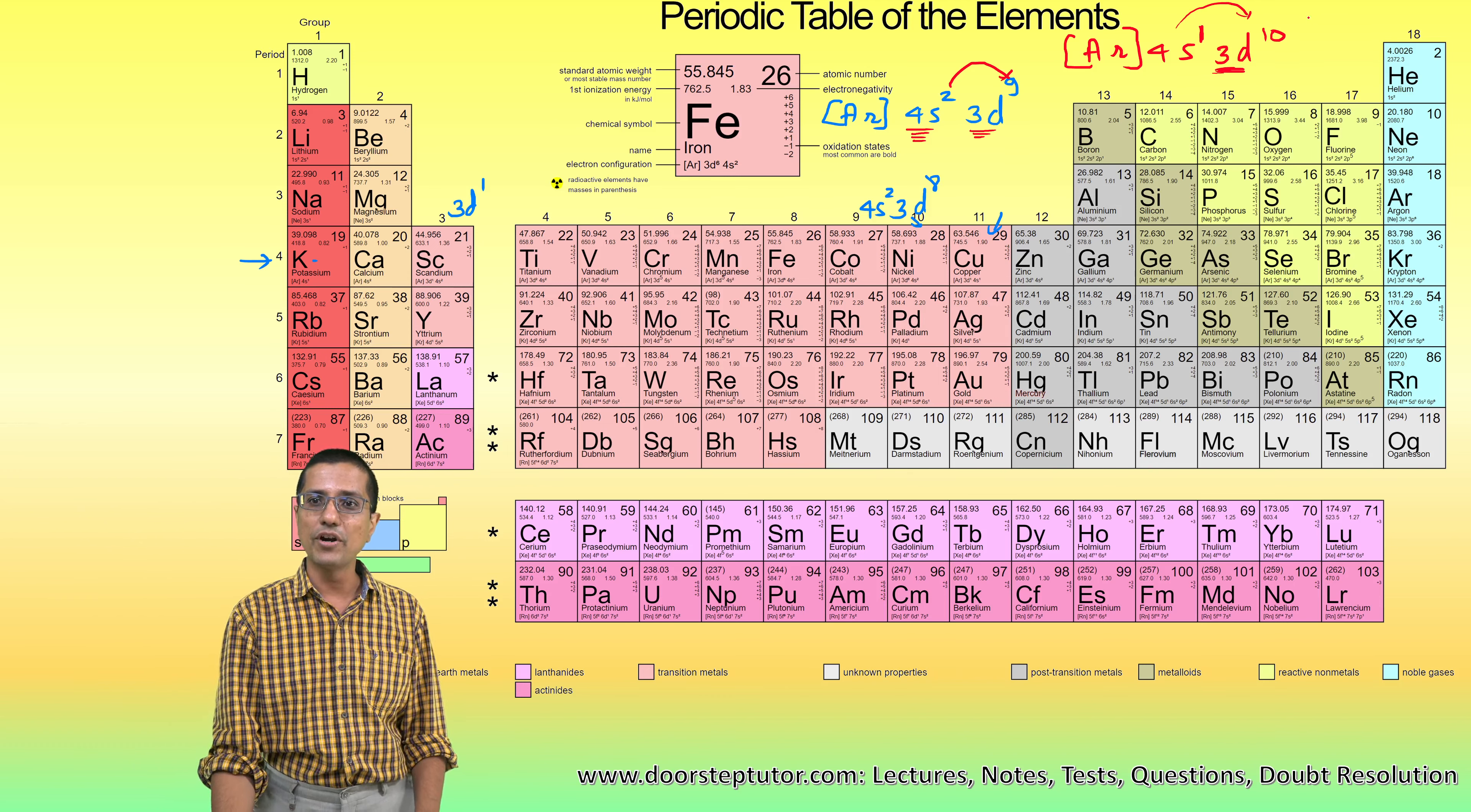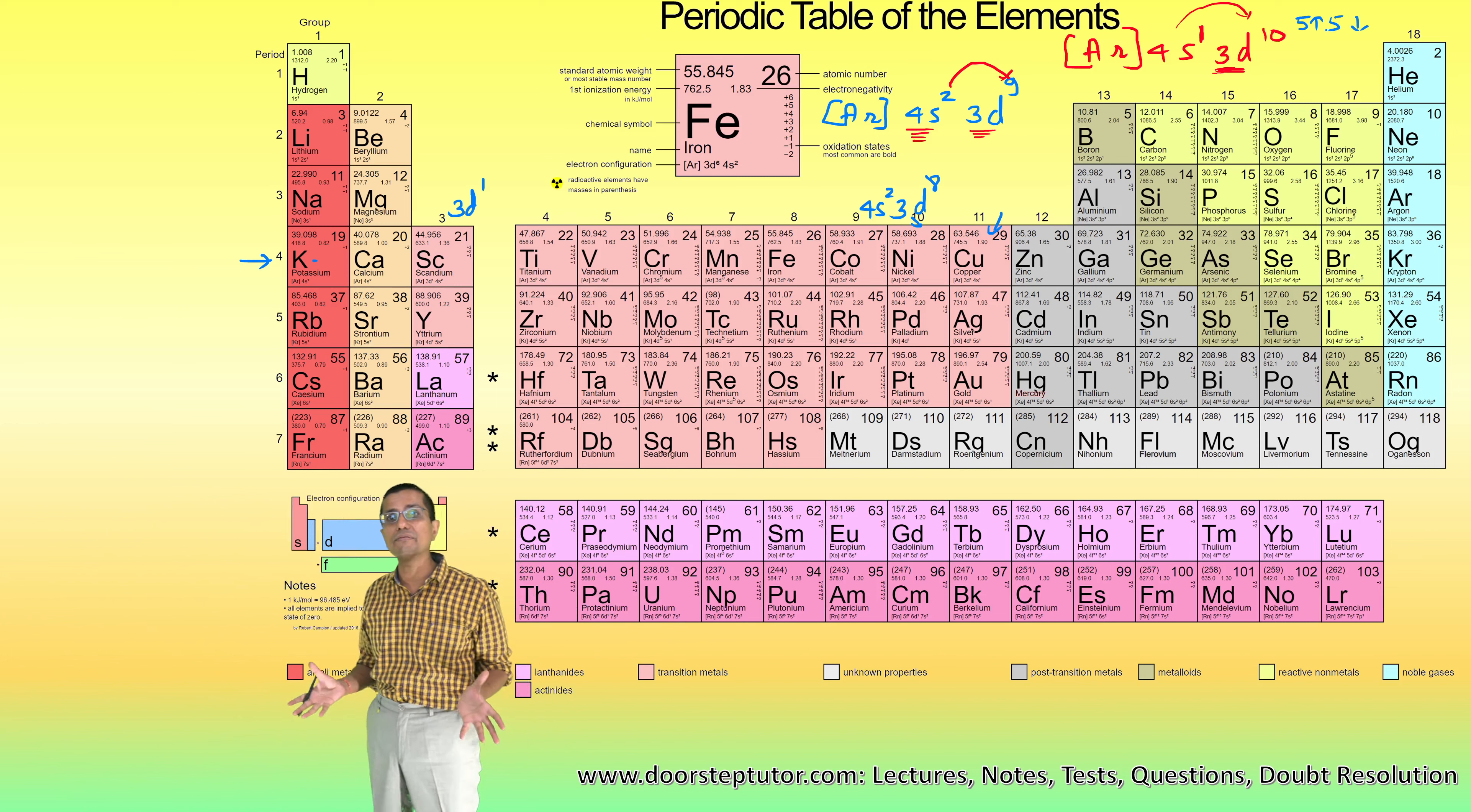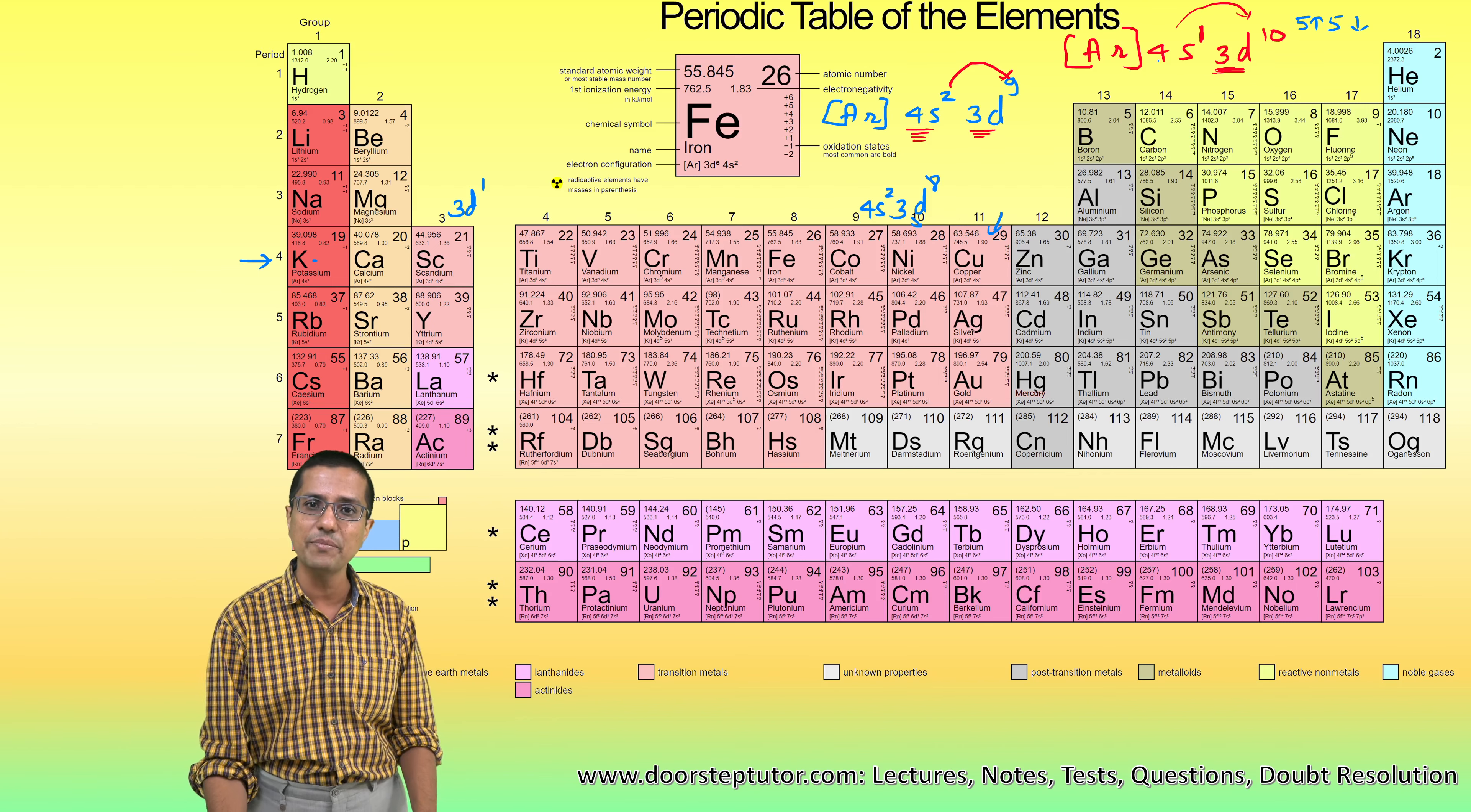Look at this electronic configuration, look at the electrons right here in the 3d sub-shell. There are five up electrons and five down electrons when it is completely full. Those five electrons can exchange among themselves, which will cause a reduction in their energies. That reduction comes because of exchange energy, and we have already seen that in our class. In this case, that exchange energy is completely missing.